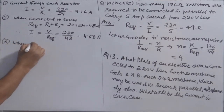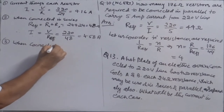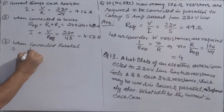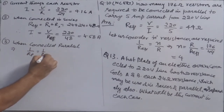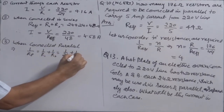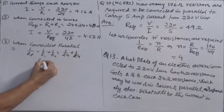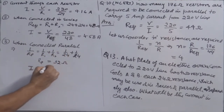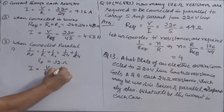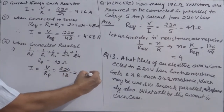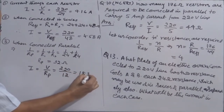Case 3 — connected in parallel: 1/R_P = 1/24 + 1/24, so effective resistance R_P = 12 ohm. Therefore current = V / R_P = 220 / 12 = 18.33 ampere.